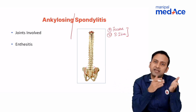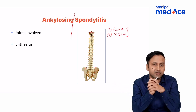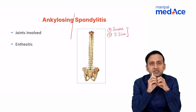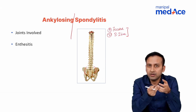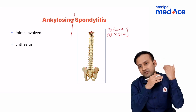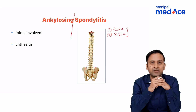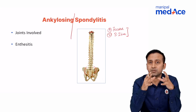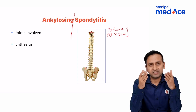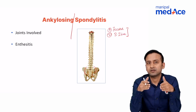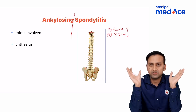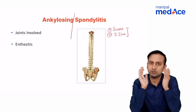So this disease causes ankylosis — that is fusion of bones — and spondylitis. The sacroiliac joints bear the maximum weight when we stand or sit, so if a disease involves the entire spine, the additive stress of weight-bearing means the SI joints are the first joints to be involved in ankylosing spondylitis.